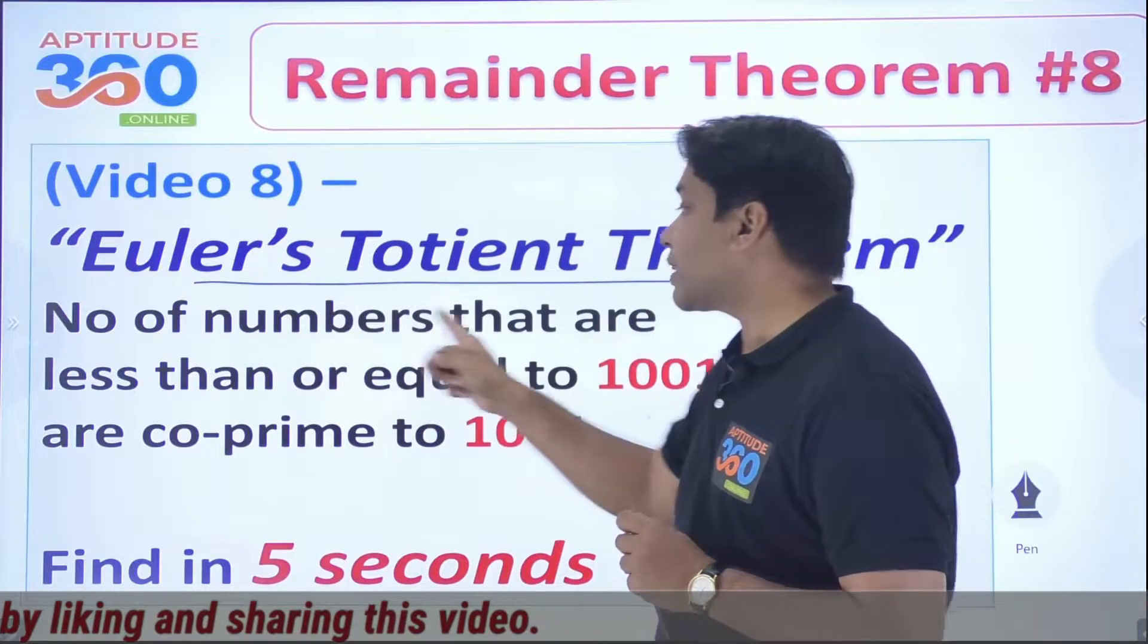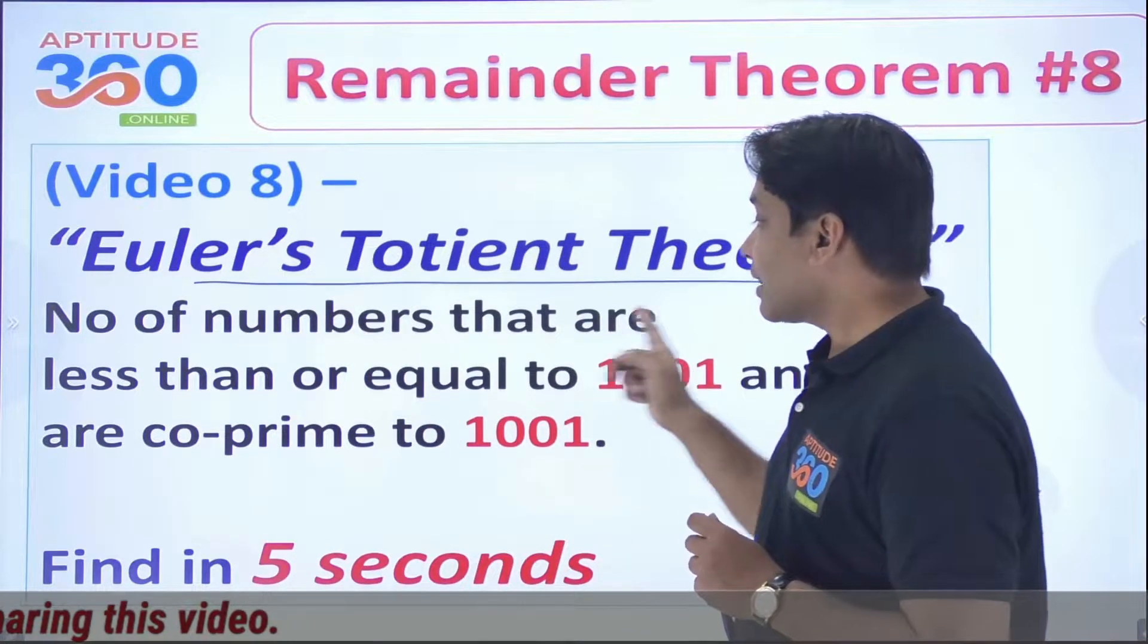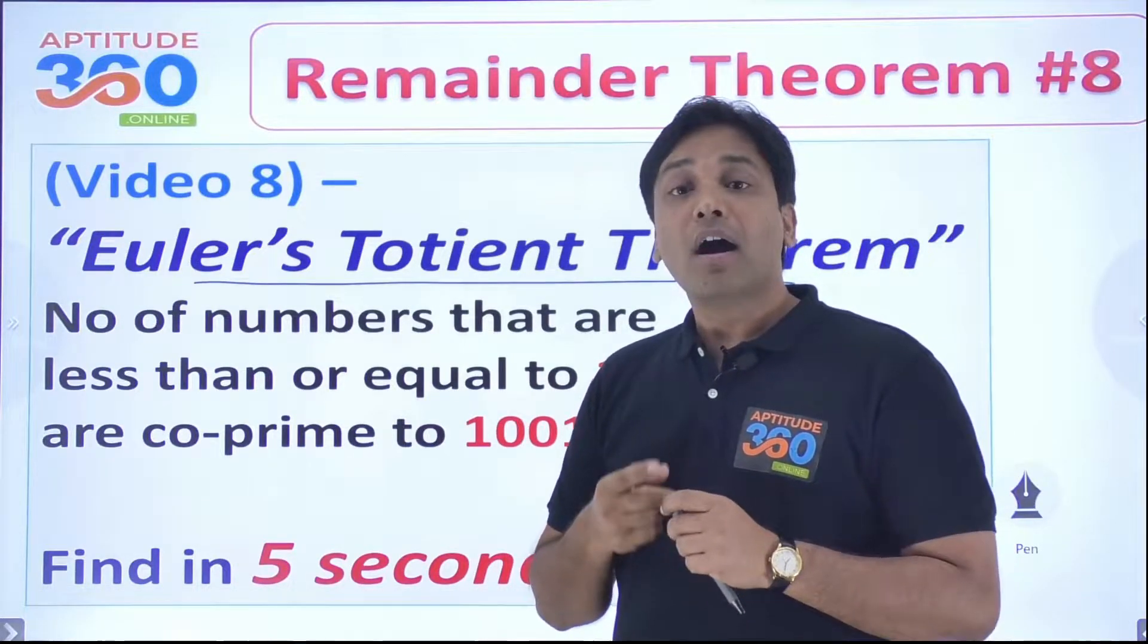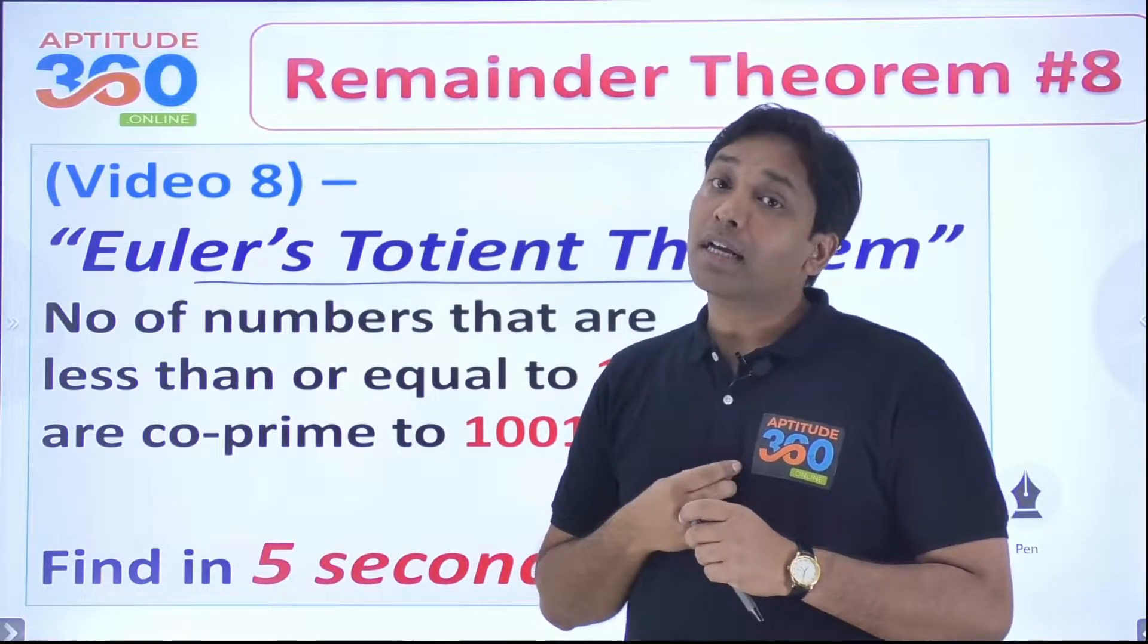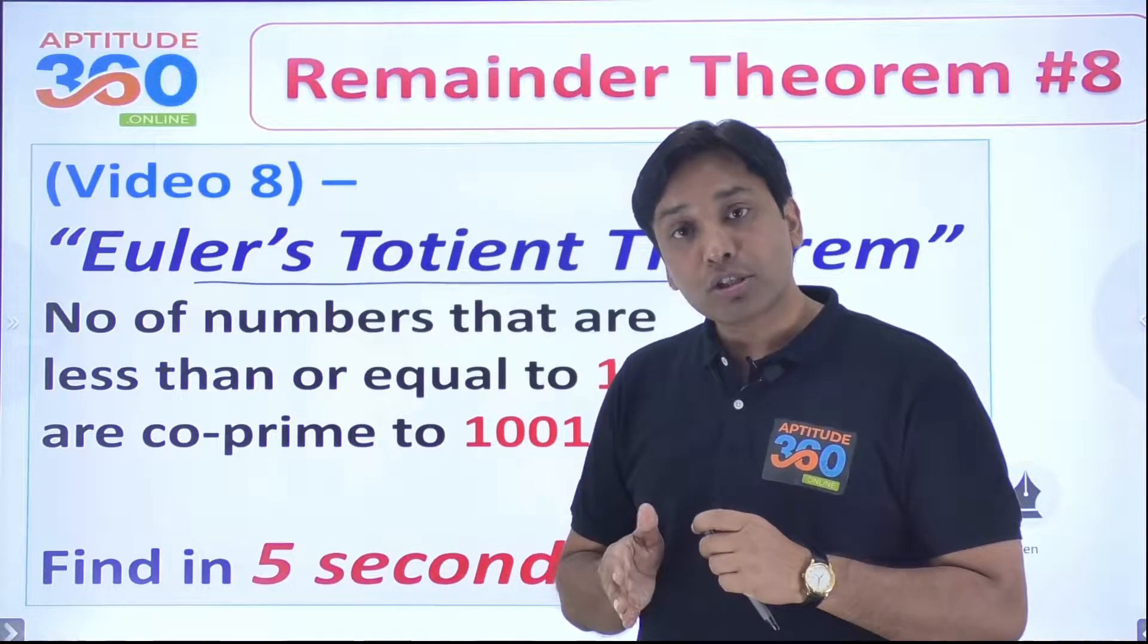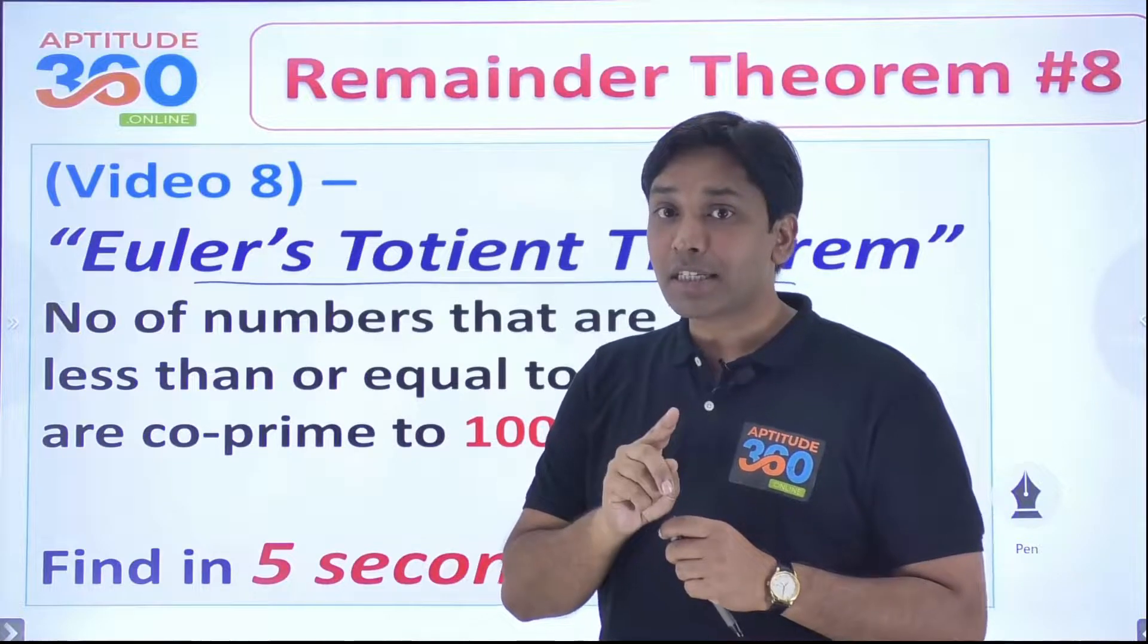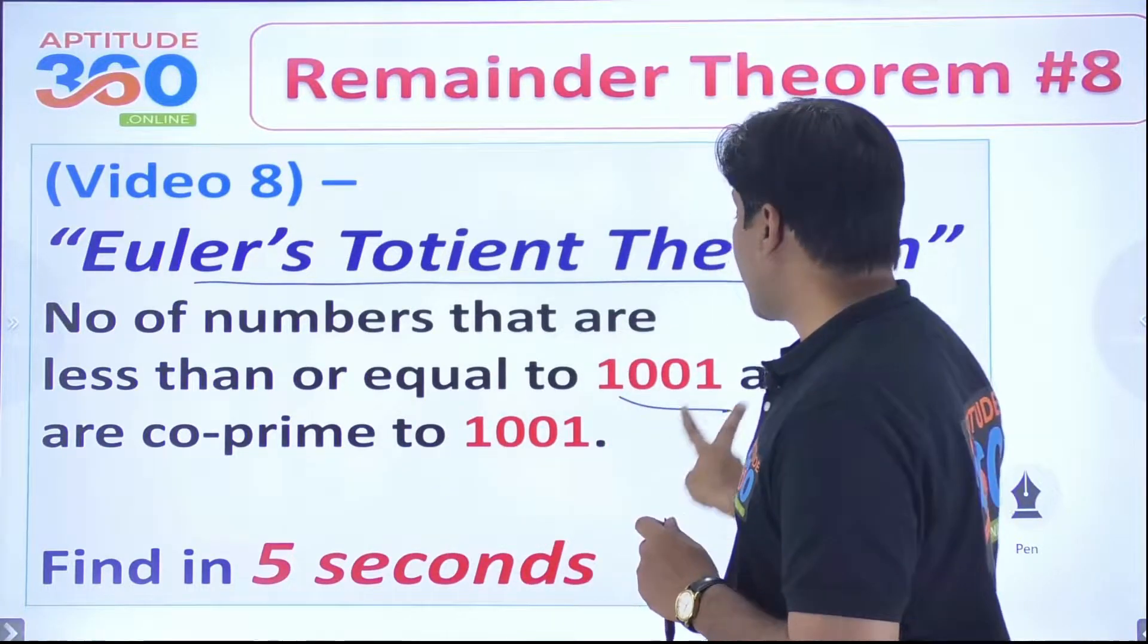For example, you need to find out number of numbers that are less than or equal to this number and are coprime. For this problem, if you use a normal method, you will take a lot of time, but this one can give you the answer in 3 seconds. So let us get started and find out how this theorem works.